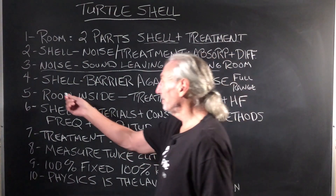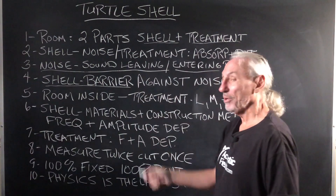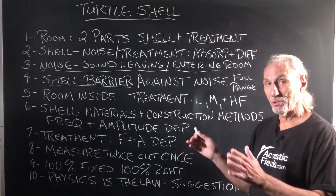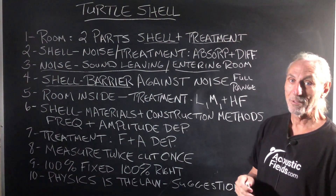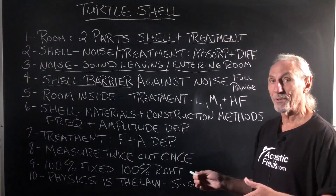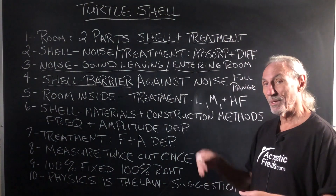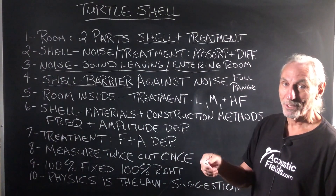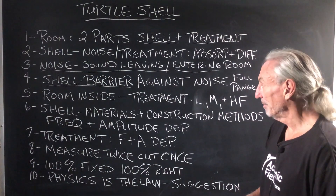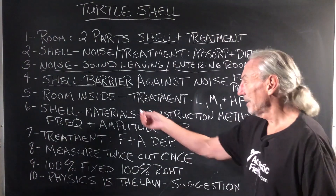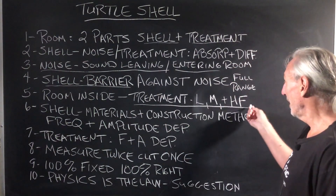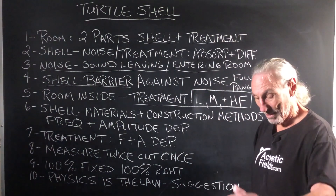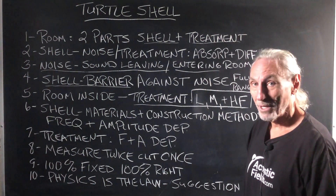Our shell that we have to build is also called the barrier. The barrier is what you build between the source of the noise and the receiver. If the source of the noise is you in the room, the barrier will help the neighbor. If the neighbor is the source of the noise, the barrier will help you inside the room. And then inside the room, treatment — that's the low, middle, and high frequency stuff that we deal with all the time.